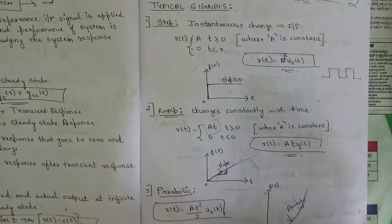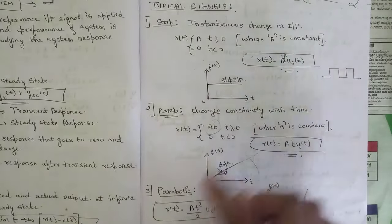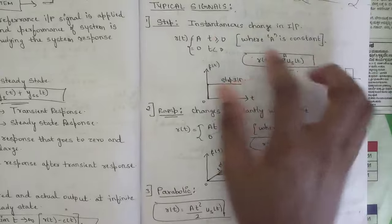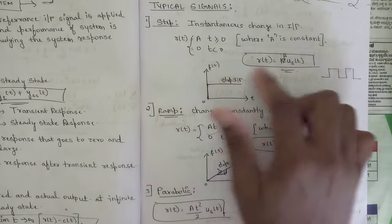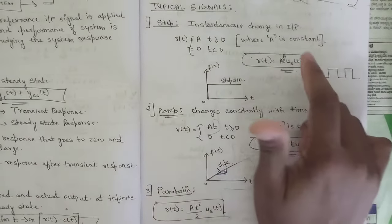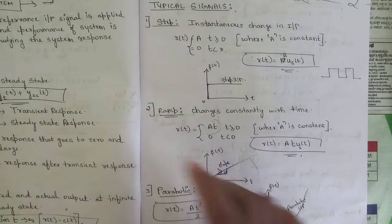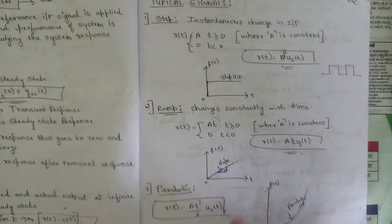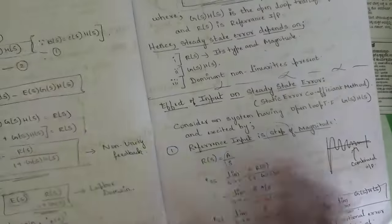Some important typical input signals we have discussed: step input, ramp input, and parabolic input. The step input is r(t) = A·u(t), the ramp input is r(t) = At·u(t), and the parabolic input is r(t) = (At²/2)·u(t).